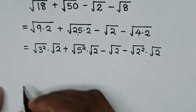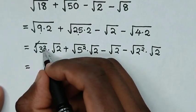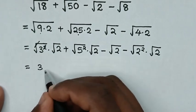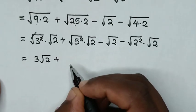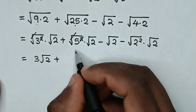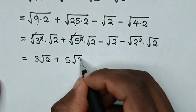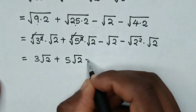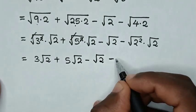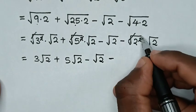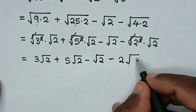Then in the next step, it will be equal to: the square root will cancel with the square, so it will be 3 square root of 2; then plus, the square root will cancel with the square, so it will be 5 square root of 2; then minus square root of 2; then minus, the square root will cancel with the square, so it will be 2 square root of 2.